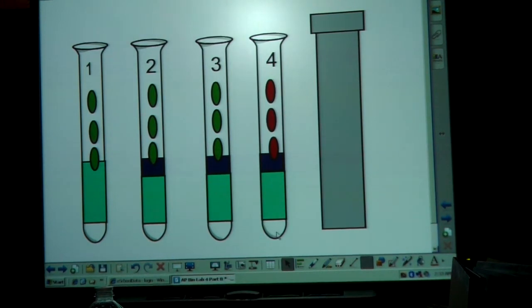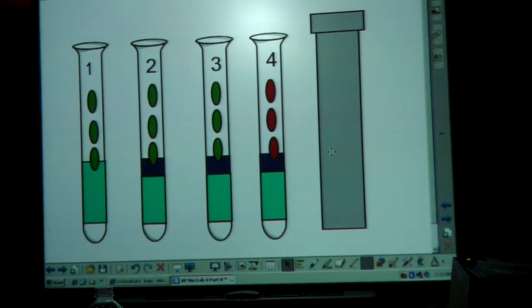Number four, again, one mil of the phosphate buffer, three mils of distilled water, one mil of the DPIP, and three drops of the boiled spinach extract.